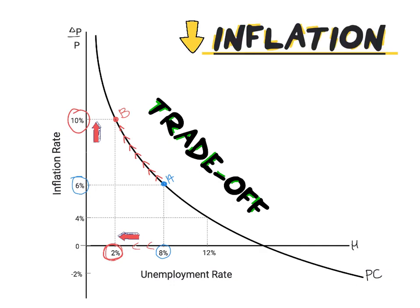Now suppose that we are dealing with an economy that focuses largely on inflation. Again we will start at point A and we want to reduce our inflation rate to 4%. By doing this, we will move along our PC curve to point C, where we will have a lower rate of inflation at the cost of a higher rate of unemployment.